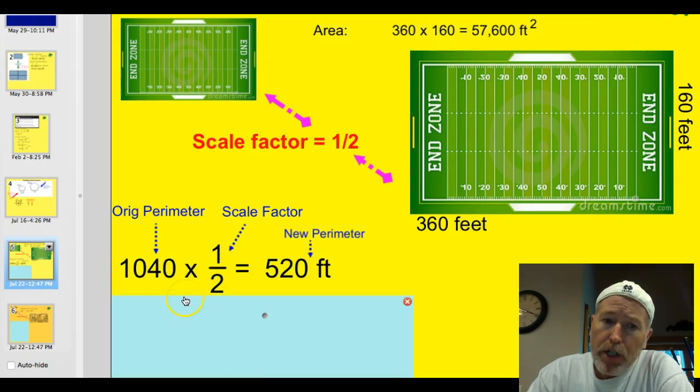We'll apply scale factor. We take that original perimeter of 1,040. We multiply it by the scale factor of 1 half, and we get 520 feet as our new perimeter. Makes sense. This one is twice as big. The perimeter on the smaller one will be half of that.